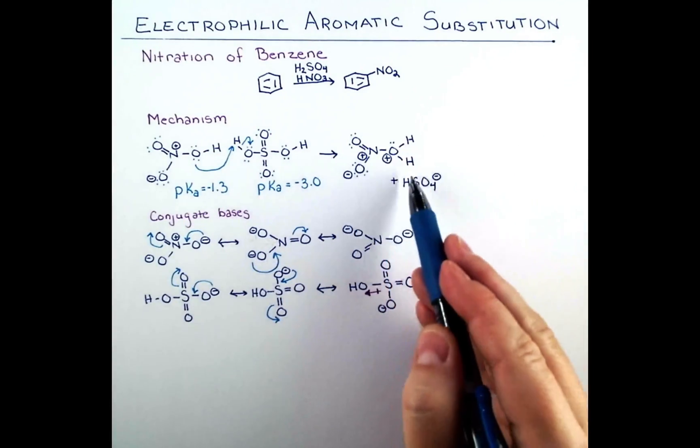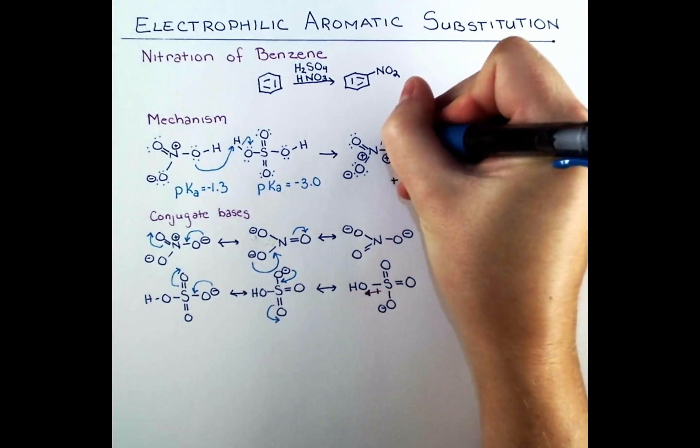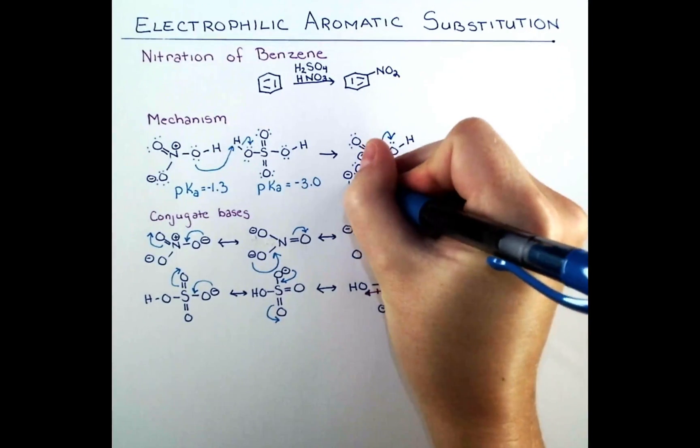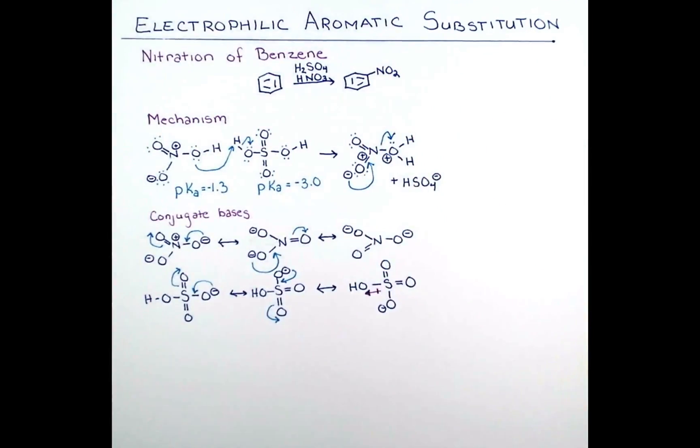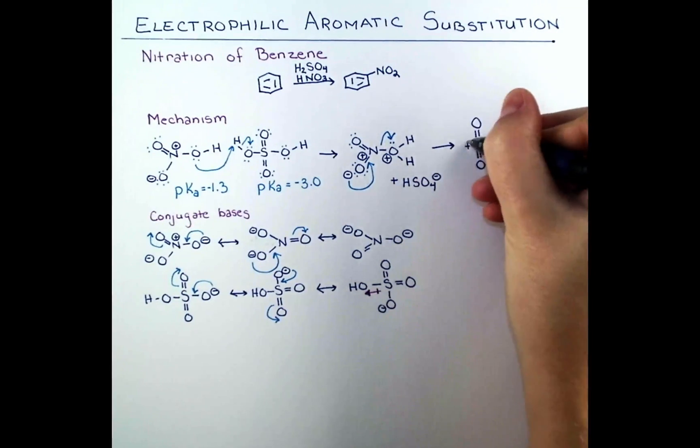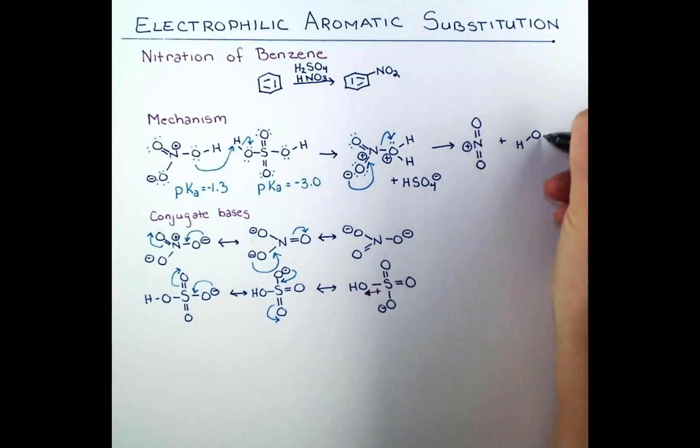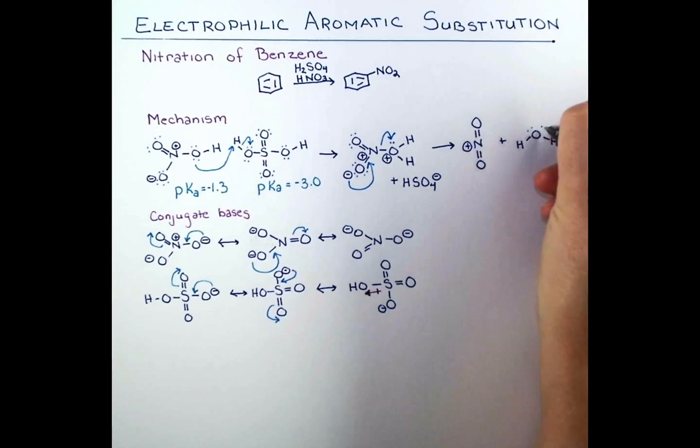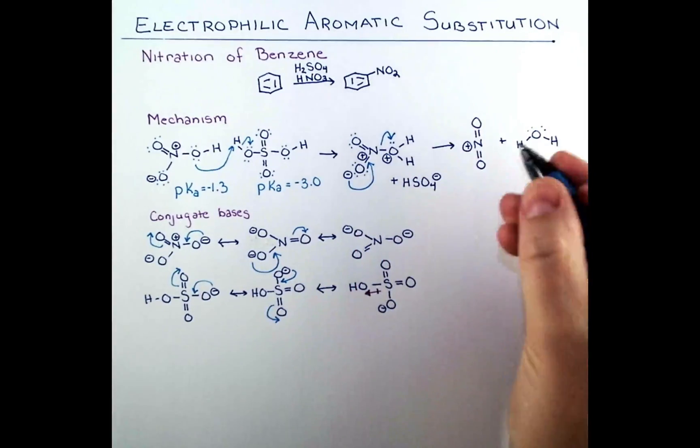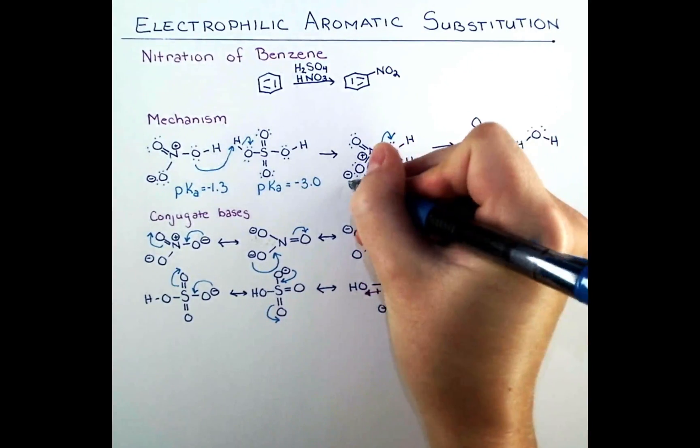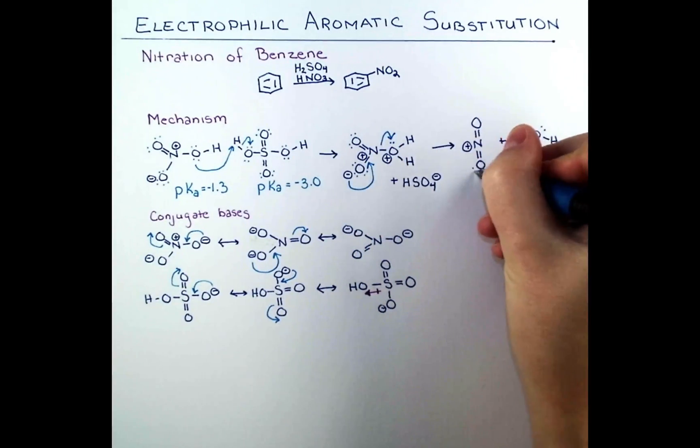Now we have two formal positive charges next to each other in this molecule. So we want to relieve this repulsive force and break off water. However, if we just made water leave, we would end up with a 2 plus charge on nitrogen, which isn't very favorable at all. Fortunately, we have that oxyanion right next door that can push down its electrons, assisting in the departure of the leaving group and leaving nitrogen with just a plus 1 charge.